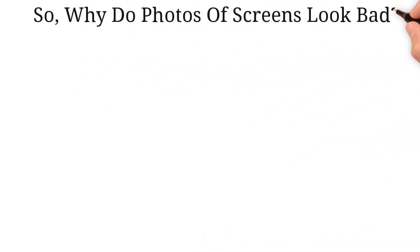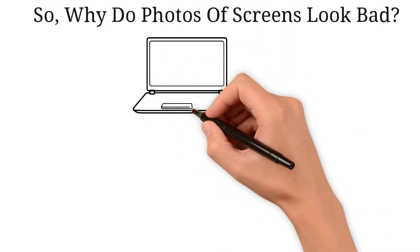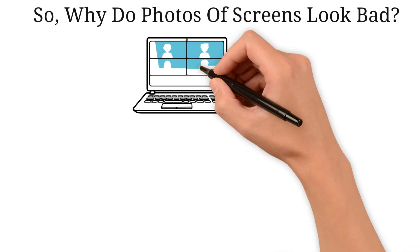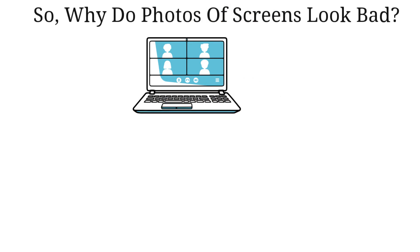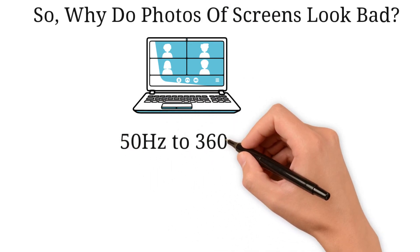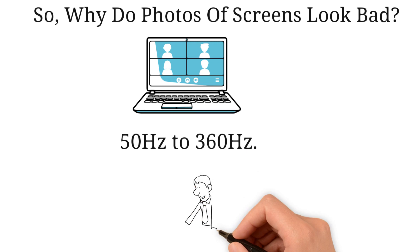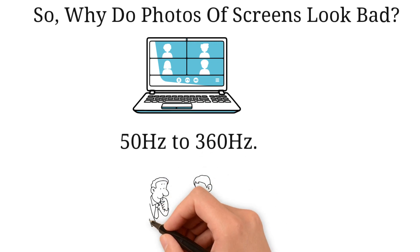So, why do photos of screens look bad? As we mentioned earlier, the image on your TV/laptop/computer screen is always changing at a rate between 50Hz to 360Hz. After that, we talked about how the shutter speed works in cameras.